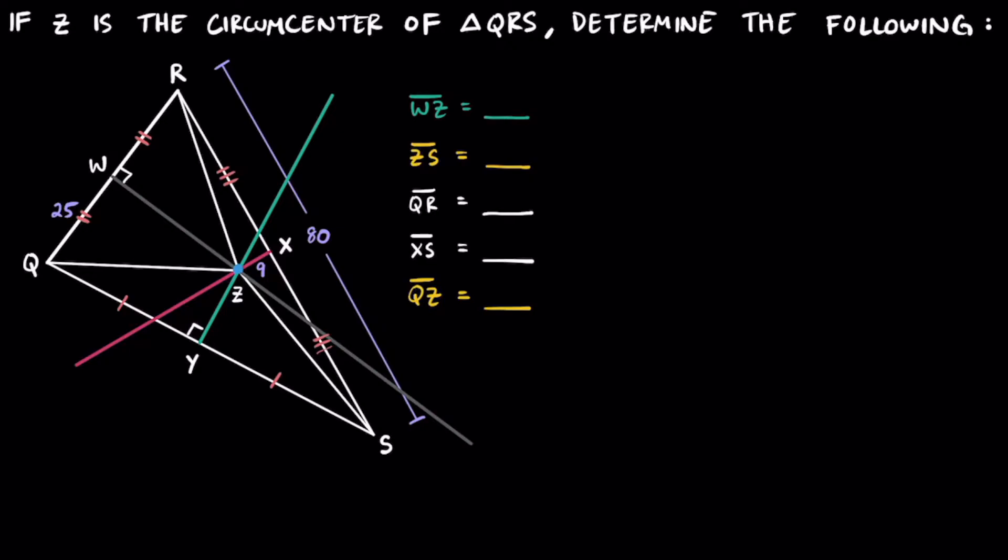Shortening all the perpendicular bisectors to clean this up a bit, it'll look like this. All three of the perpendicular bisectors create right triangles as well as congruent segments.